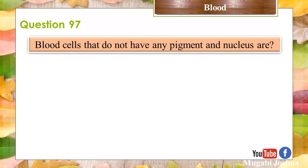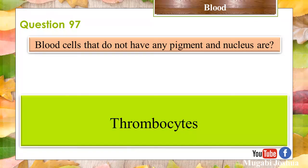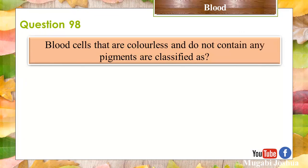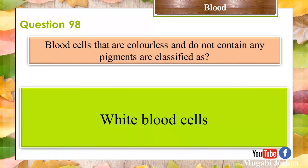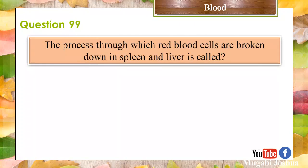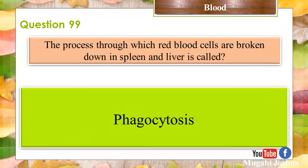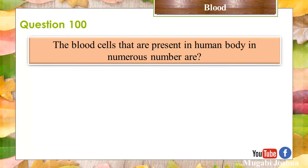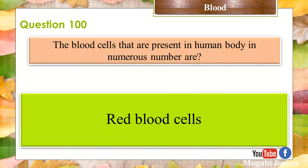Question 97: Blood cells that do not have any pigment and nucleus are? Thrombocytes. Question 98: Blood cells that are colorless and do not contain any pigment are classified as? White blood cells. Question 99: The process through which red blood cells are broken down in the spleen and the liver is called? Phagocytosis. Question 100: The blood cells that are present in the human body in the most numerous number are? Red blood cells.